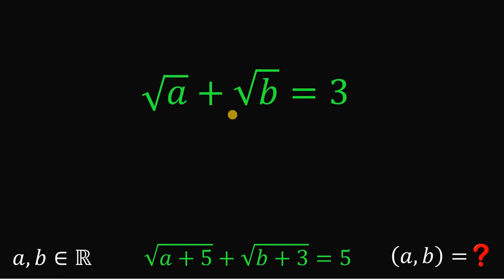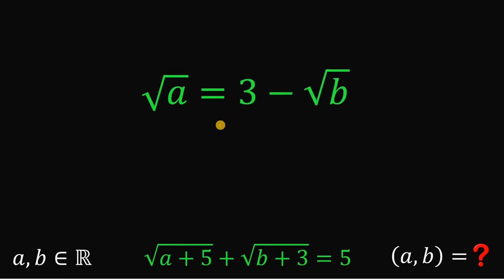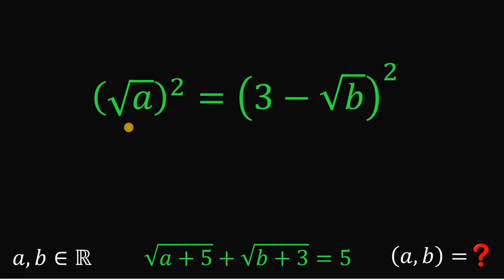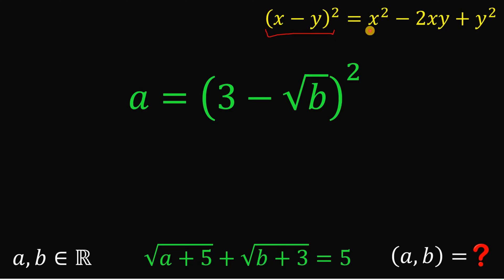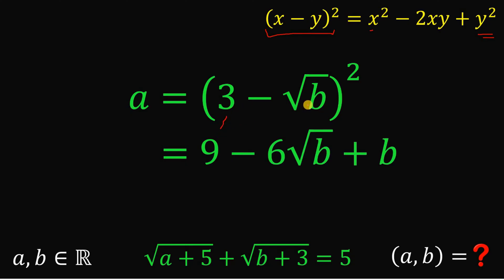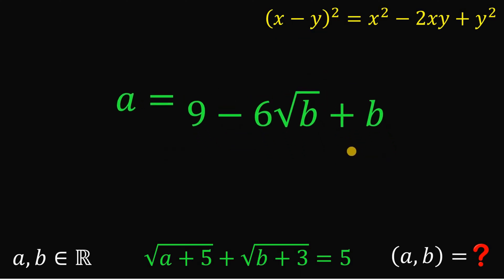What we're going to do is to subtract square root of B on both sides, then square on both sides. On the left-hand side, square root of A raised to the power of 2 is just A. On the right-hand side, we use the identity x minus y squared equals x squared minus 2xy plus y squared. So 3 minus square root of B quantity squared gives us 9 minus 6 times square root of B plus B.